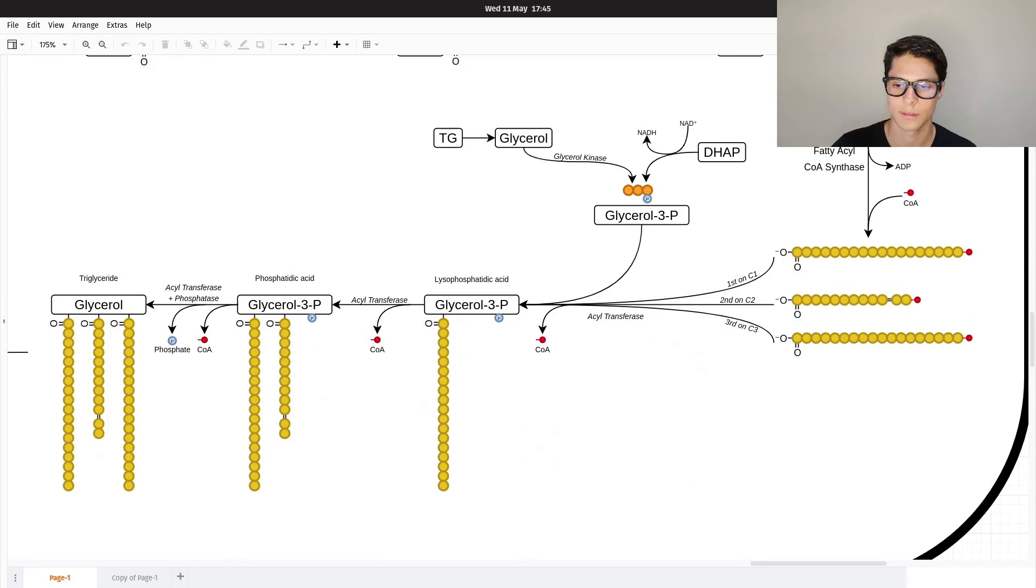So to recap: we get the fatty acids, we add a CoA to them, we make glycerol-3-phosphate via DHAP or via glycerol, and then with these four elements we can create the triglyceride, adding one fatty acyl-CoA at a time to the glycerol-3-phosphate.